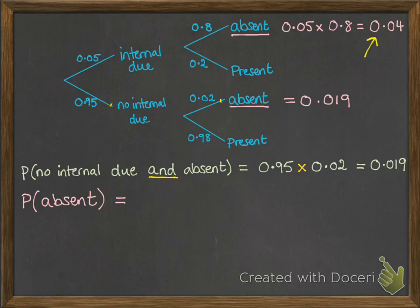Now we can use this one or this one to get the answer that he's absent on that day. The keyword 'or' means we're going to add those probabilities.